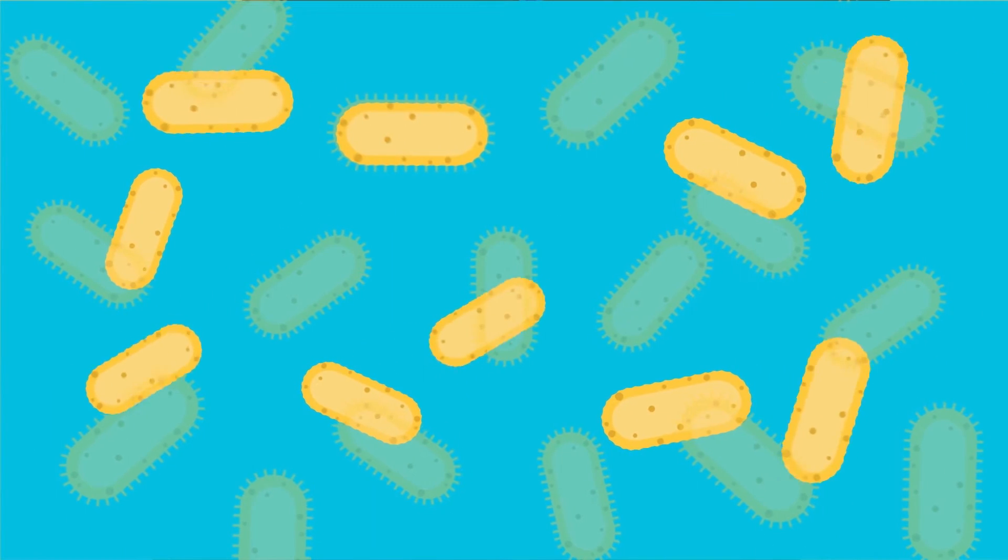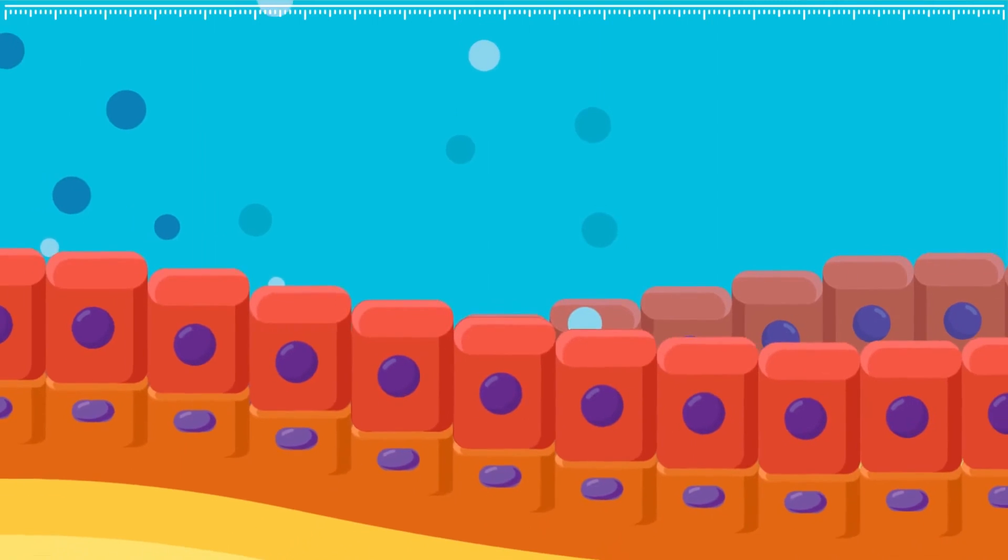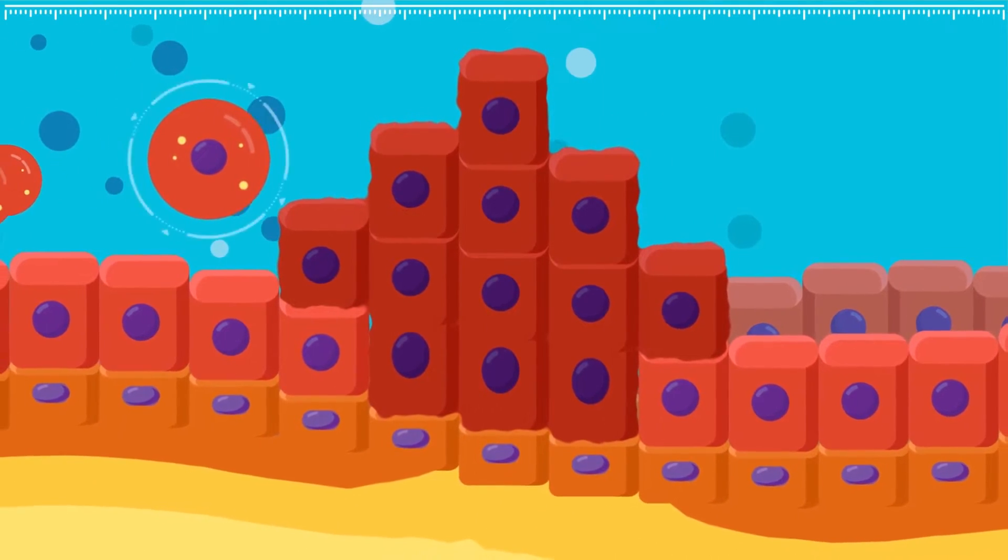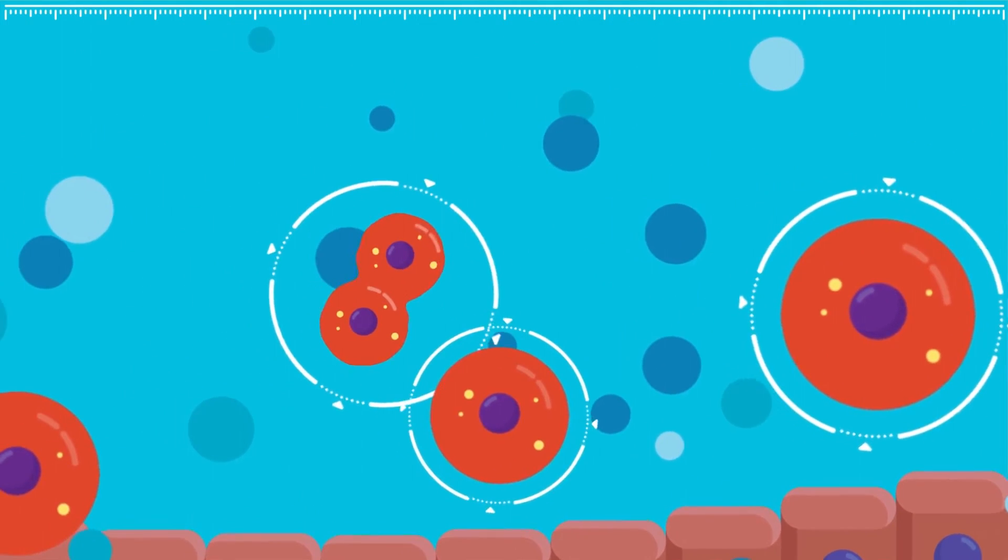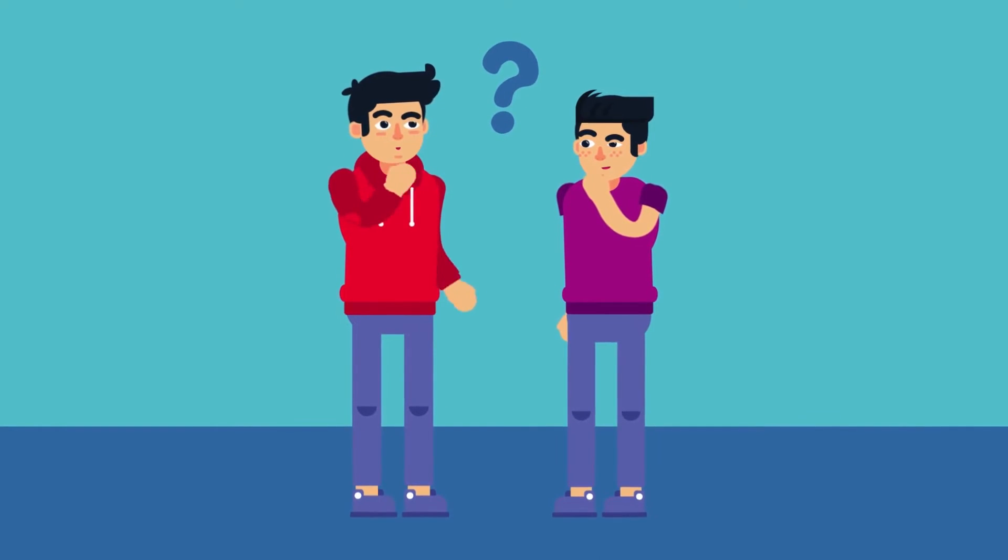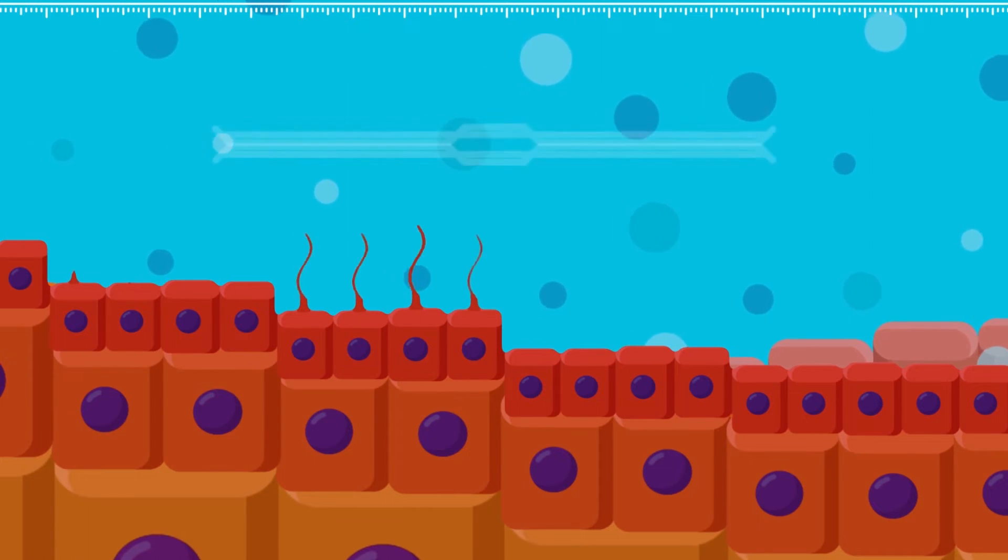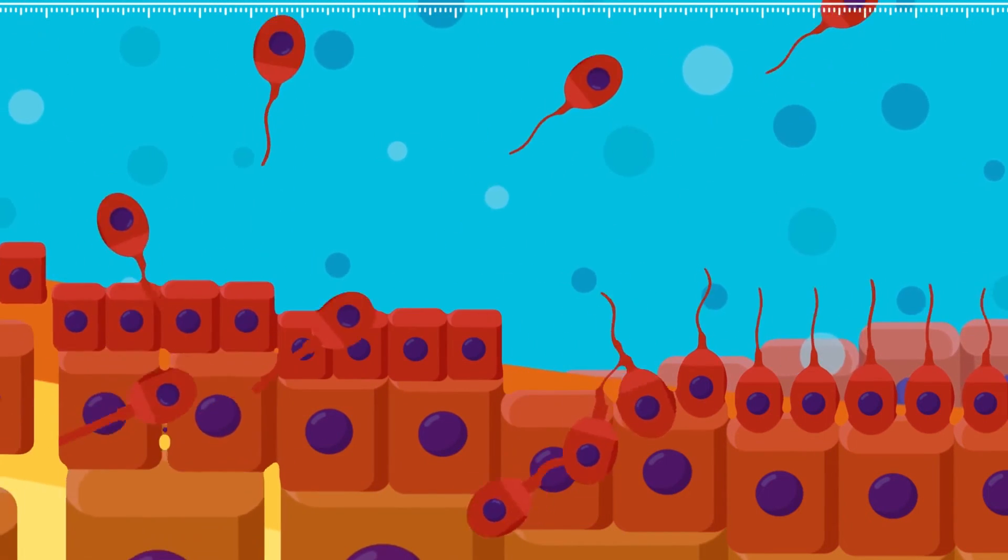If mitosis remains unchecked, it may result in uncontrolled growth of cells leading to cancer or tumor. The next important phase of cell cycle is meiosis. Have you ever wondered why you were different from your siblings? The answer lies within the amazing process of meiosis. What is meiosis?